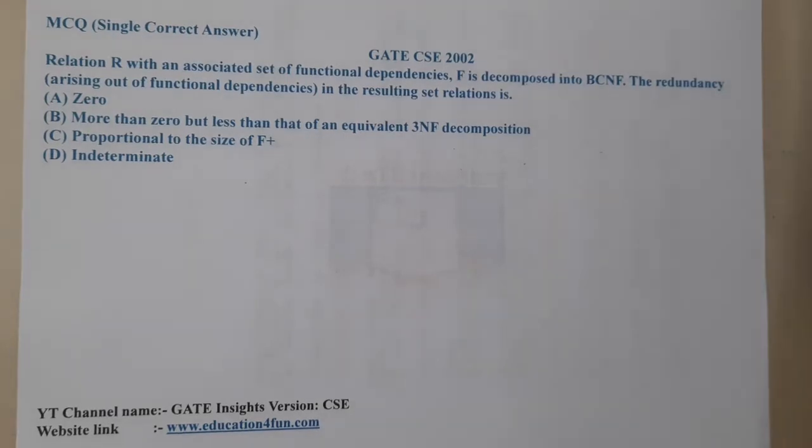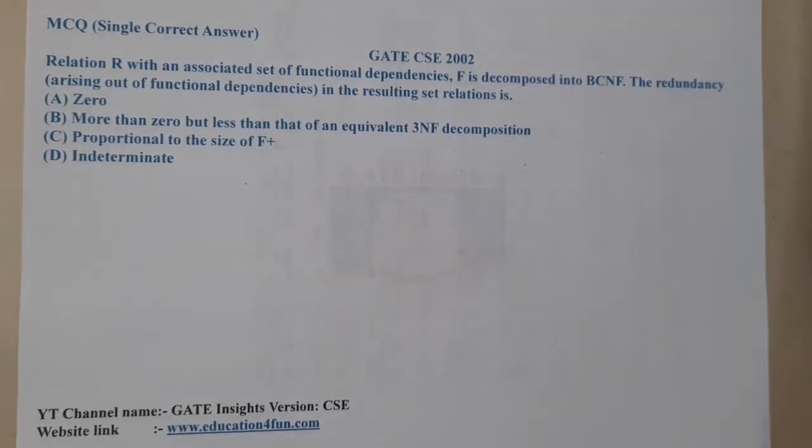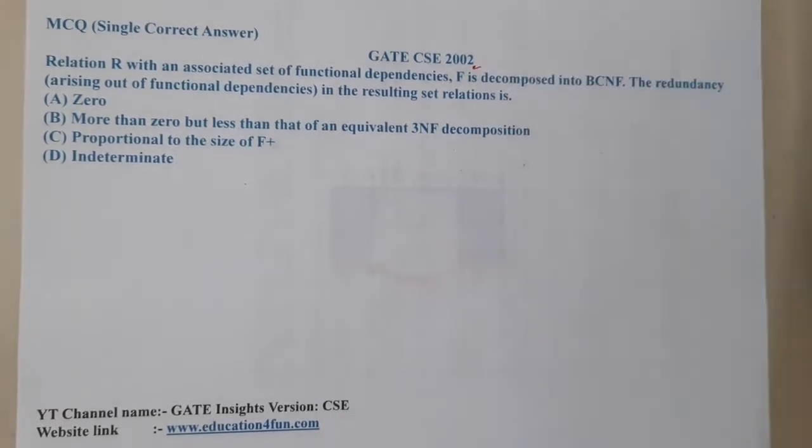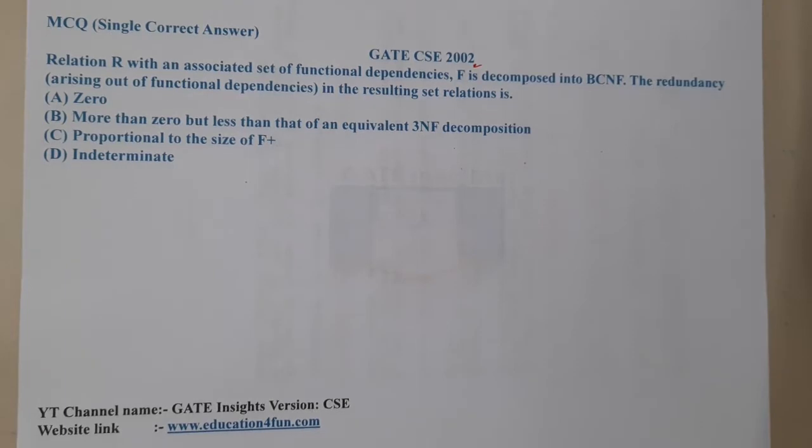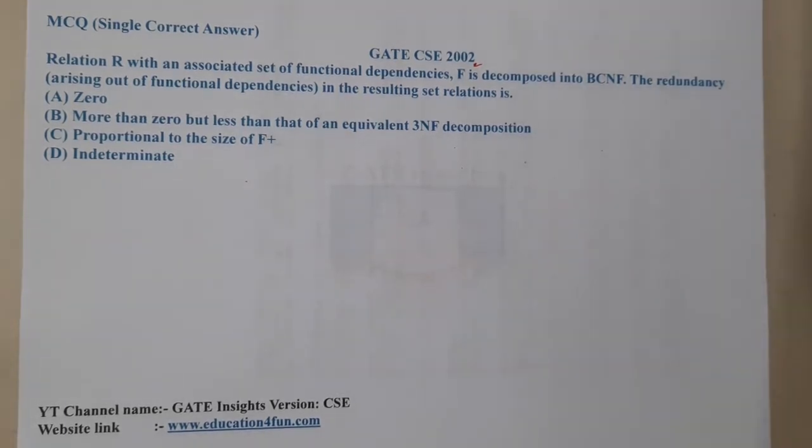Hello guys, we are back with our next lecture. In this lecture, let us go through the next question. This question belongs to GATE CSE 2002. The given question is: a relation R with an associated set of functional dependencies F is decomposed into BCNF.